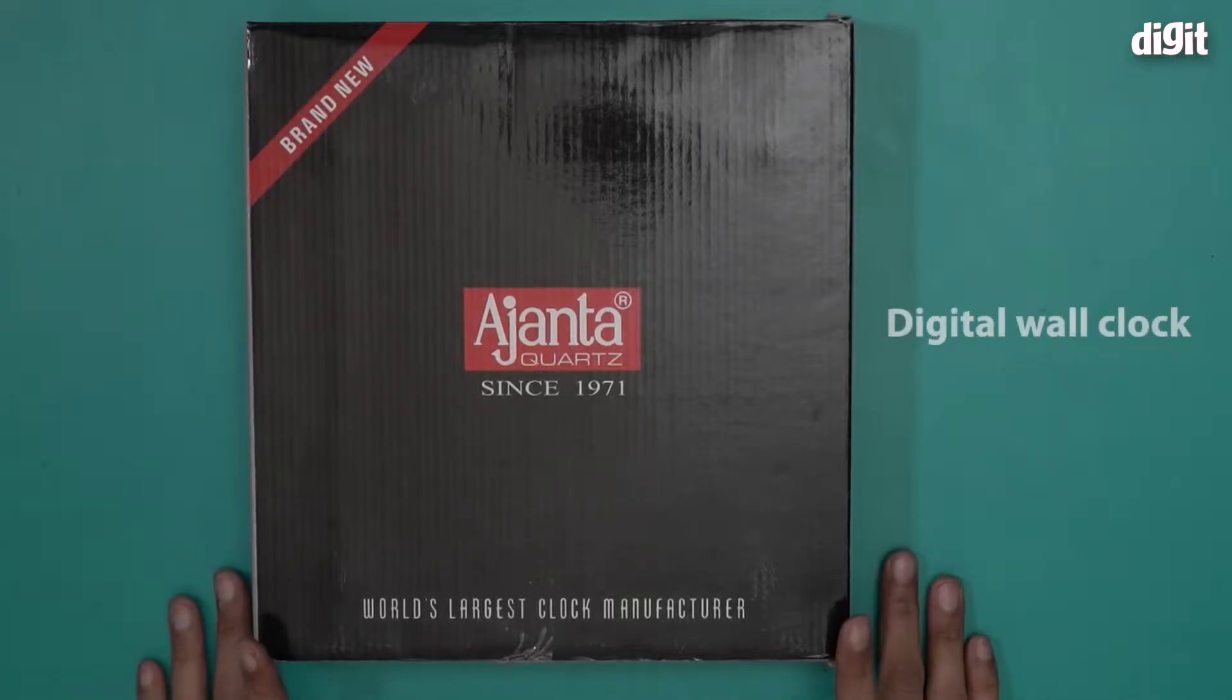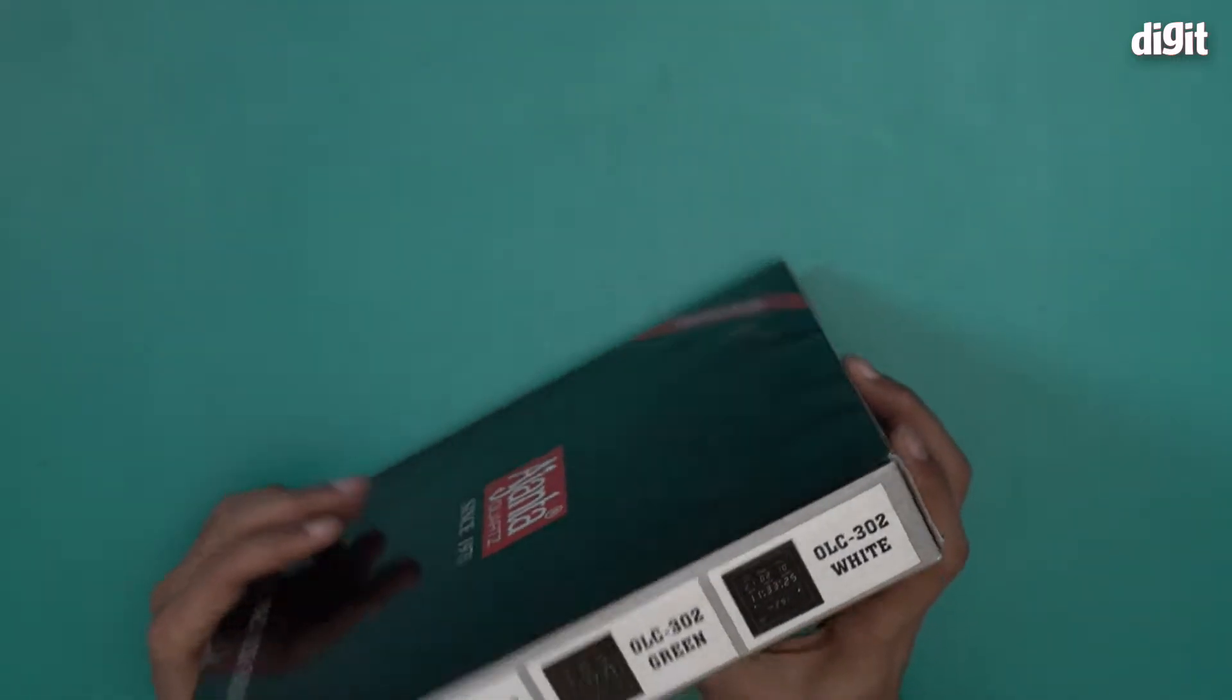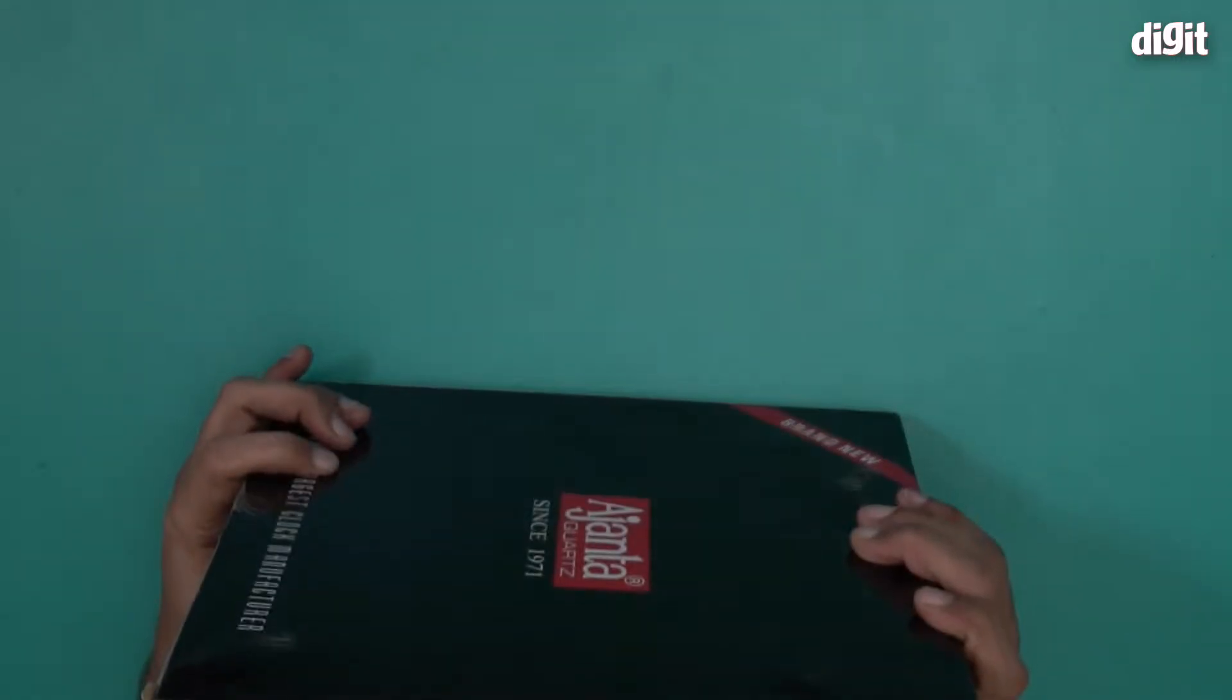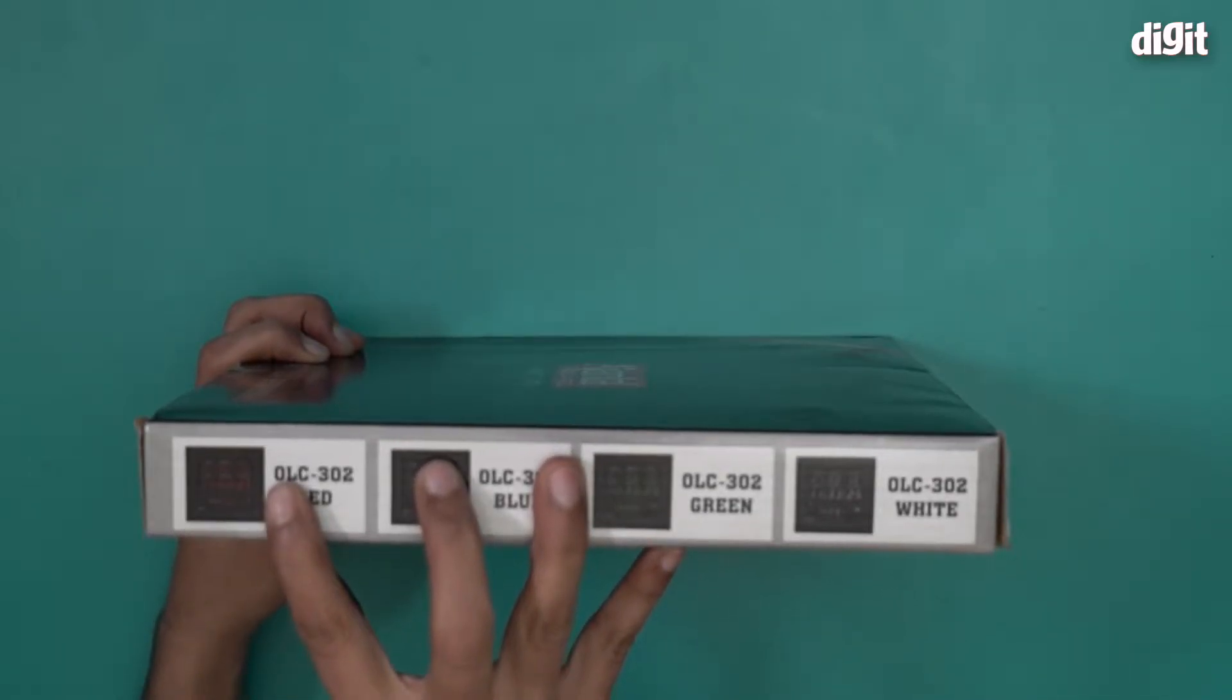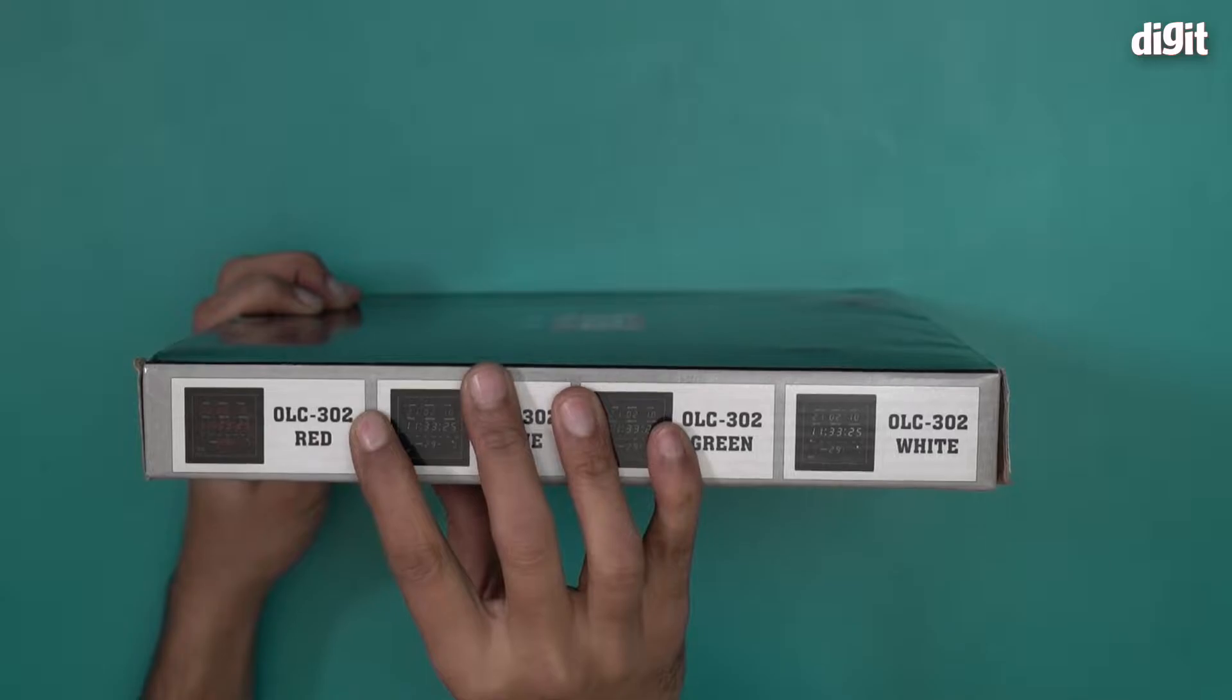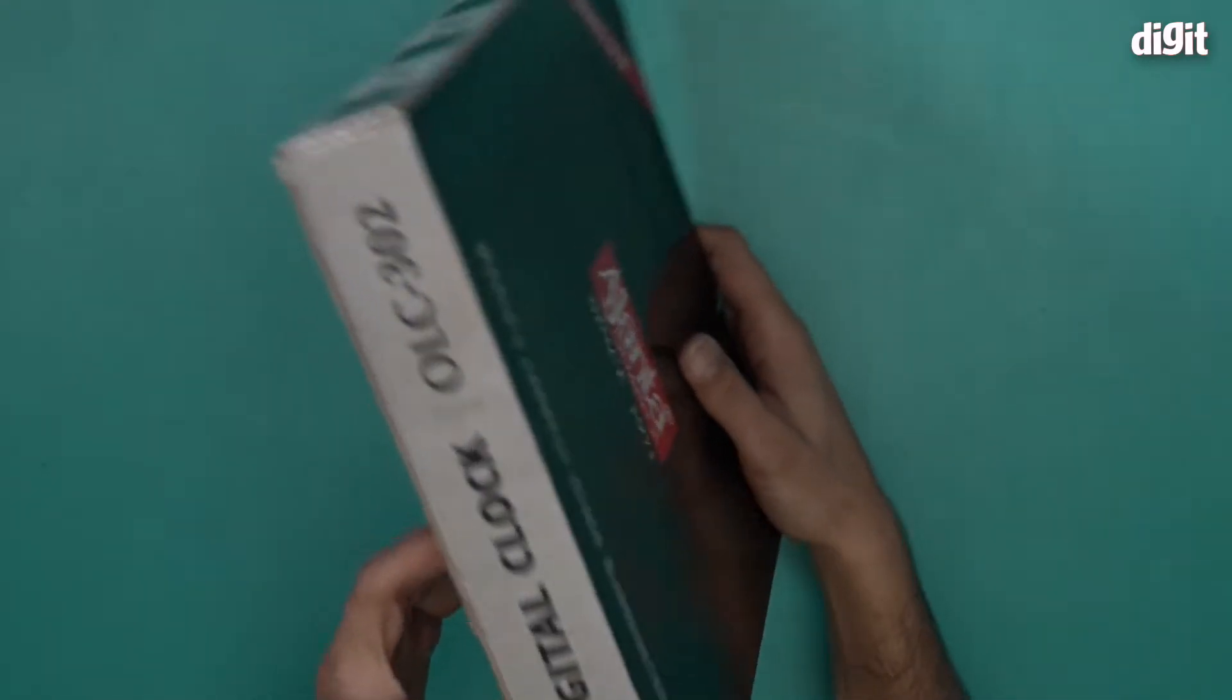This is a wall clock from Ajanta, one of the largest manufacturers of clocks in the world, and we have OLC 302. You'll notice there are all the different variants of OLC 302 listed over here. We'll find out which one we have and that's more or less all the information on the box.